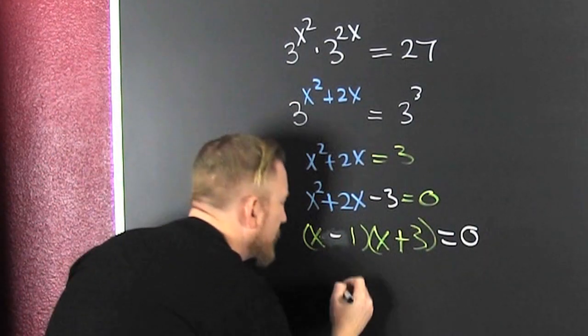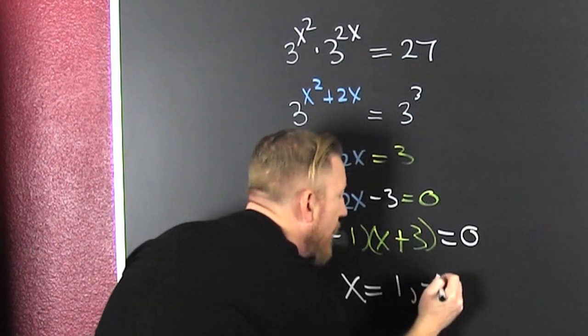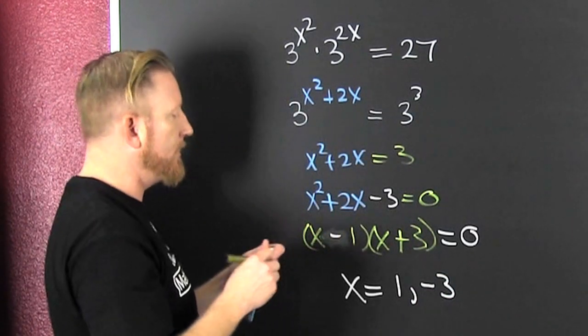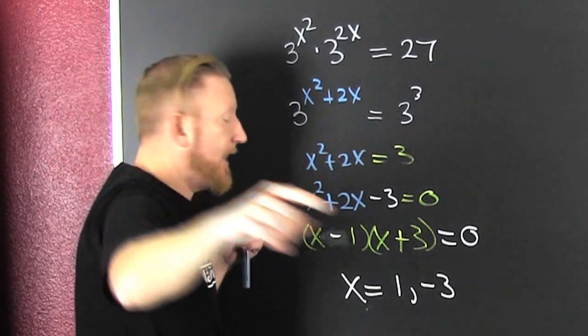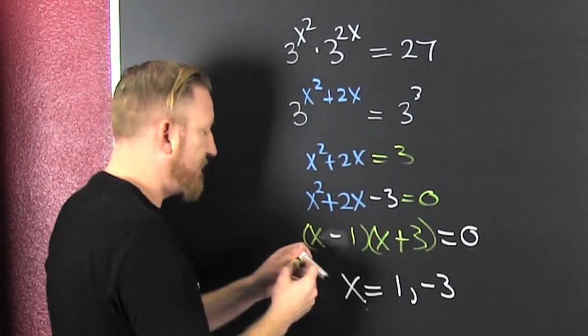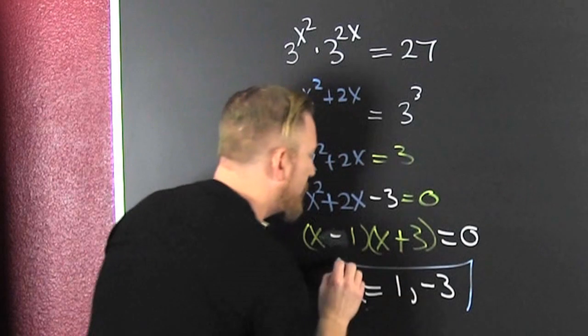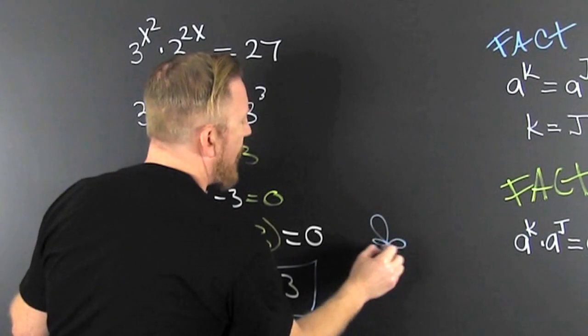Now what? You're setting each factor equal to zero and you find that x is equal to 1 or minus 3. Did we get two answers? We do. Check it. Throw them back up in there. See if it works. It's a designer problem. It worked out.